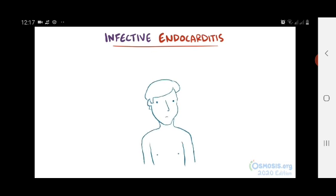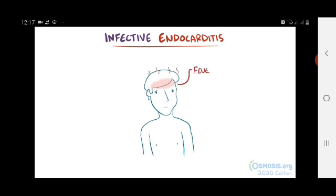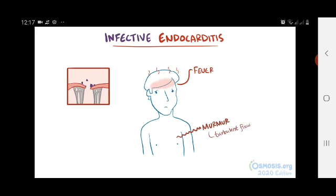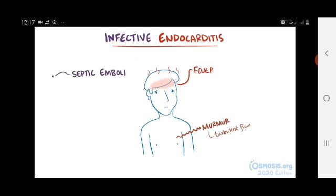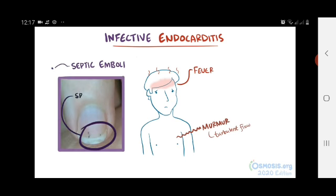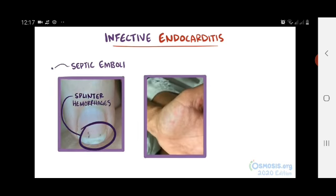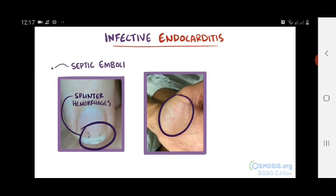People with infective endocarditis almost always have a fever, as well as a new heart murmur that results from turbulent flow past the damaged heart valve. Sometimes those vegetations can detach from the valve, and little clumps of pathogens can float through the bloodstream — called septic emboli. These can lodge under the fingernails causing splinter hemorrhages, or in the palms and soles of the feet causing small, painless, flat, erythematous lesions called Janeway lesions.